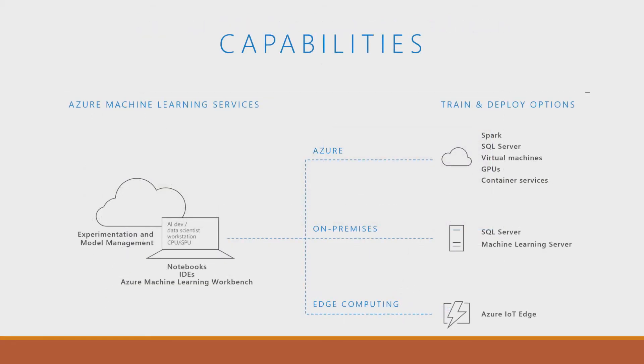We already have Azure Machine Learning Studio, which has been there since 2014. We got feedback from customers that they want more — different compute options, different frameworks. That's where we launched new capabilities in September during our Ignite event. Now, whatever IDE you are using, whatever framework you are using, you can use that to train your model, and then once you're ready, you can deploy it — be it in the cloud, on-prem, or even on IoT Edge. In the demo, I'm going to walk you through this entire process of how we use a Jupyter notebook, train it using a DSVM, and then deploy it in the cloud.